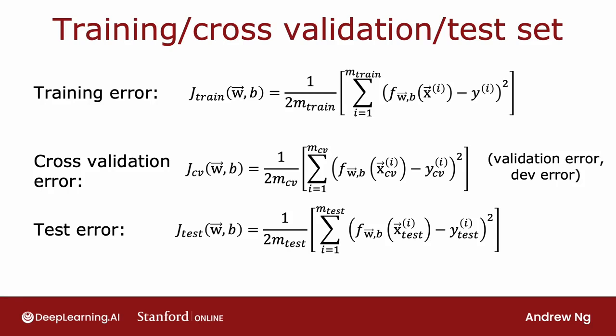This new term in the middle—the cross-validation error—is just the average over your mcv cross-validation examples of the squared error. In addition to being called the cross-validation error, it is also commonly called the validation error for short, or even the development set error or the dev error.